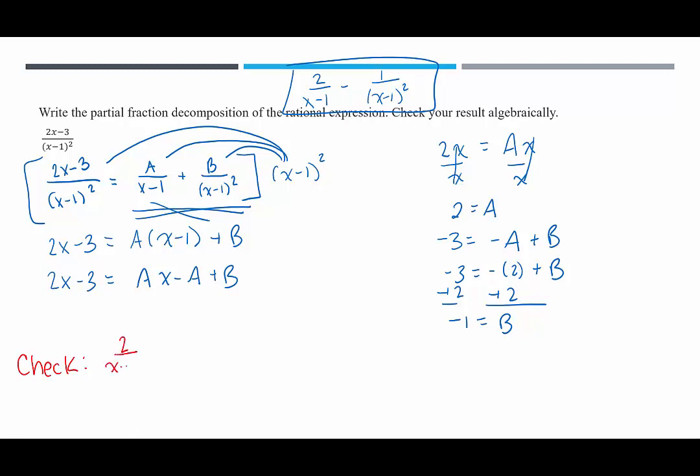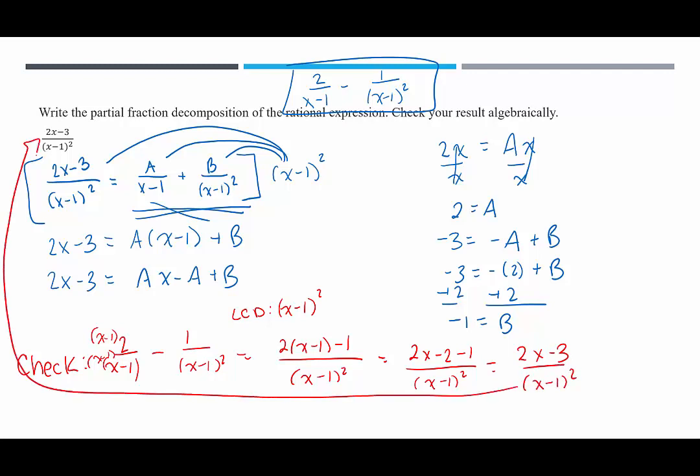Does 2 over x minus 1 minus 1 over x minus 1 squared really give us what we want? Let's see. We need a common denominator here, we're so close. We just need two factors of x minus 1 in both denominators. This one only has one, so I need one more x minus 1 factor. So we're going to have 2 times x minus 1 minus 1 all over x minus 1 squared. That's 2x minus 2 minus 1, over x minus 1 quantity squared. That's 2x minus 3 over x minus 1 squared, which matches what we started with.